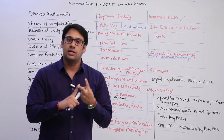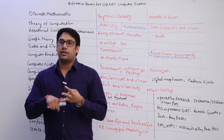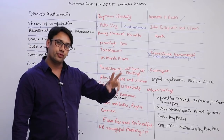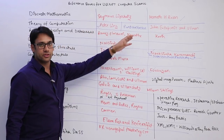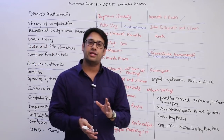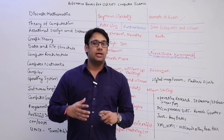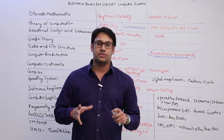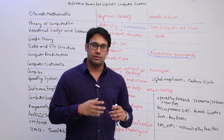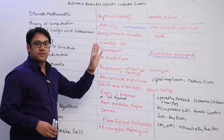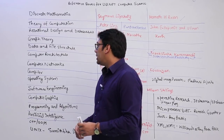The second preference should be given to the test series provided by us — practice as much as possible because practice is the key to success. Then go to the exercise portions of these standard books. For example, Kenneth H. Rosen has a huge number of questions — just solving those is more than enough for discrete mathematics in UGC or any exam where discrete mathematics is a subject.